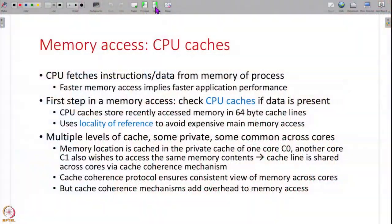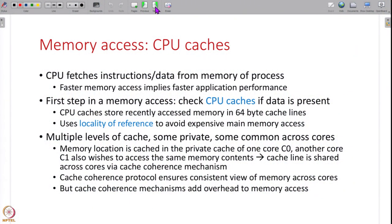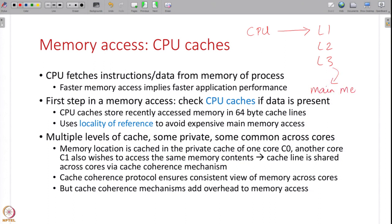This is a recap of what we have studied so far. When the CPU requests some instruction or data at a certain virtual address, the first step is to check the CPU caches. CPU caches store data either using the virtual address or the physical address. The CPU checks one or more layers of its caches — L1, L2, L3 and so on. If the data is present in any of these caches then it is a cache hit and the CPU can proceed. If not, the CPU has to go to main memory to fetch the data.